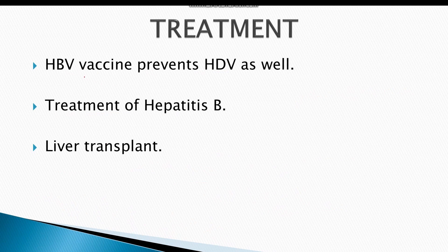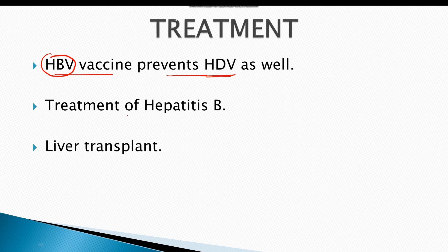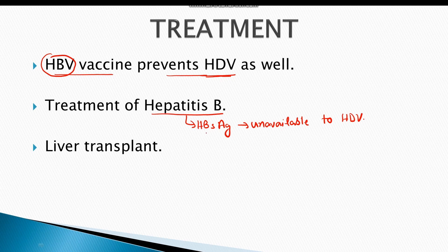Since hepatitis D virus is dependent upon hepatitis B virus for its life cycle, the hepatitis B vaccine also protects against hepatitis D virus infection. Without hepatitis B virus infection, hepatitis D cannot complete its life cycle and hence there is no hepatitis D virus infection. The goal of treatment is to cure hepatitis B and make hepatitis B surface antigen unavailable to hepatitis D virus, which requires hepatitis B surface antigens to complete its life cycle and form new virions.